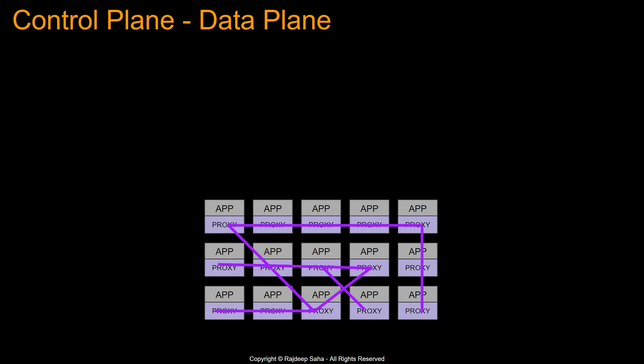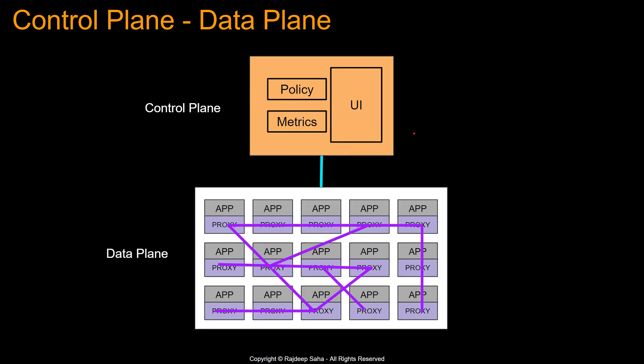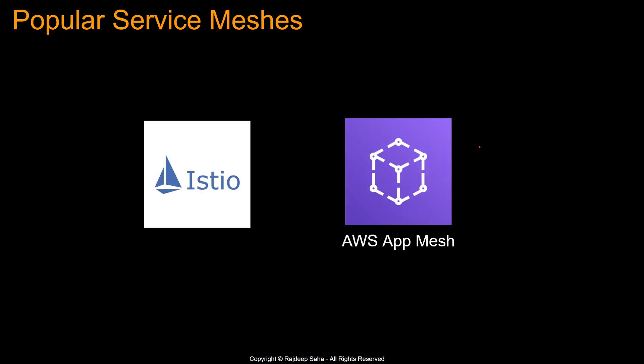The control plane manages and configures the proxies to route traffic. Additionally, the control plane can enforce policies and collect telemetry. There are a couple of popular service meshes: Istio, which is open source, and App Mesh from AWS.